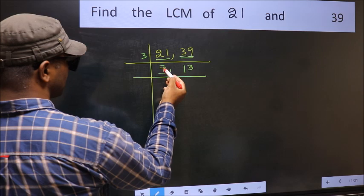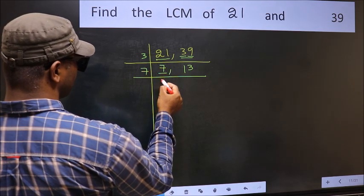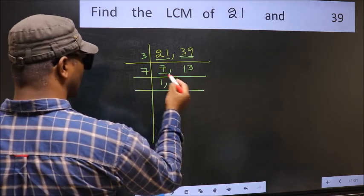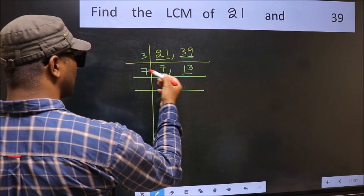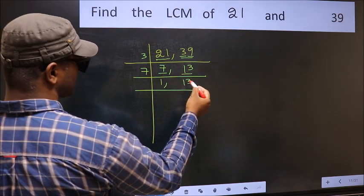Now here we have 7. 7 is a prime number, so 7 ones is 7. The other number 13 is not divisible by 7, so you write it down as it is.